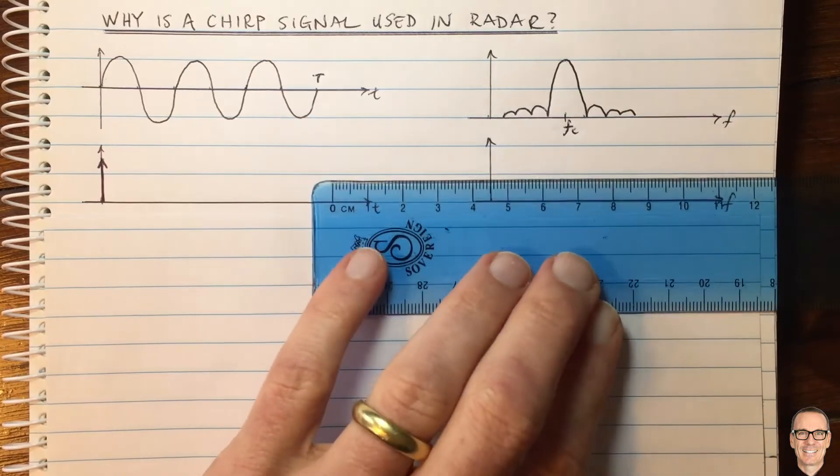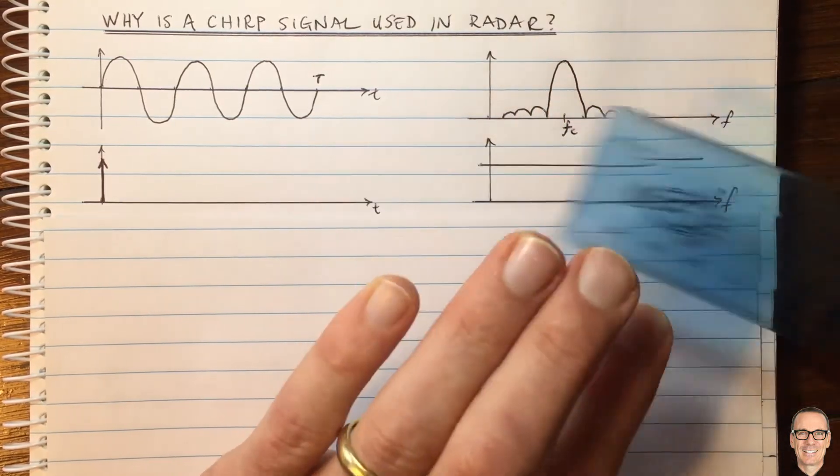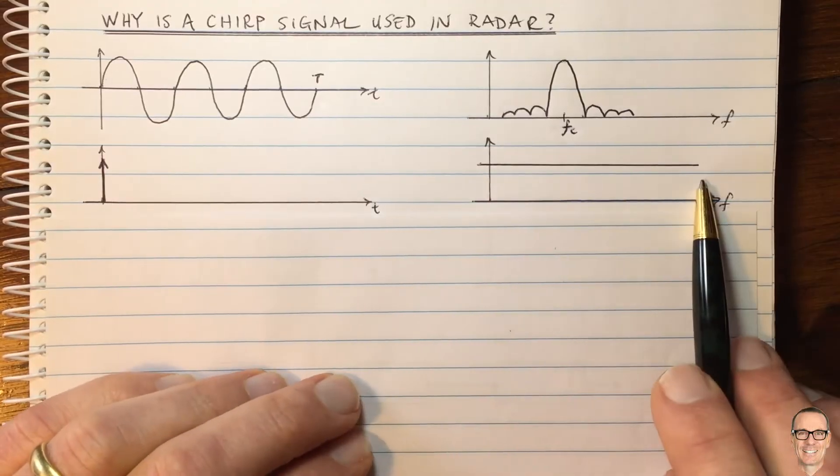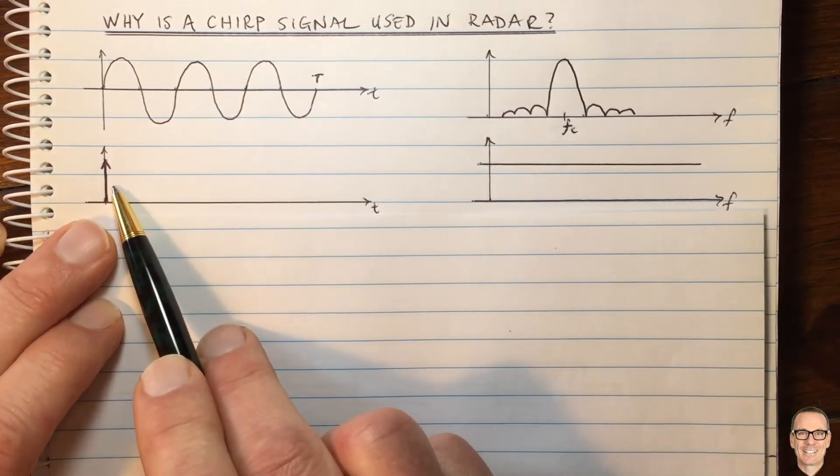Now let's think about that in the frequency domain. Well, that is flat in the frequency domain. So all frequencies are included. It's a very wide band signal. What are some of the challenges with this?